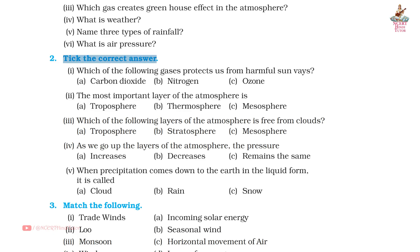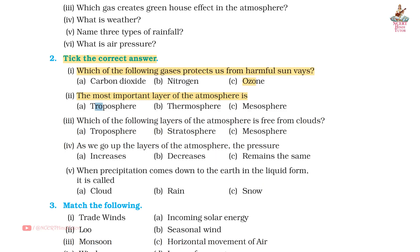Second exercise, tick the correct answer. First, which of the following gases protects us from harmful sun rays? Answer: Ozone. Second, the most important layer of the atmosphere is? Answer: a. Troposphere.